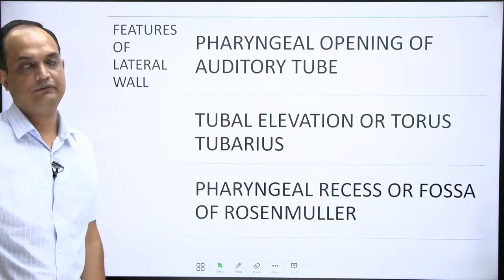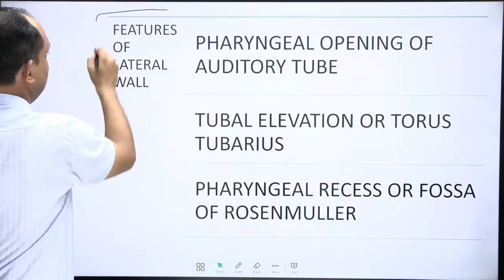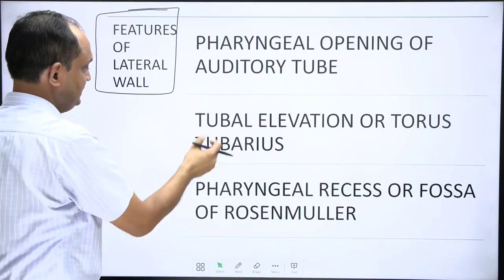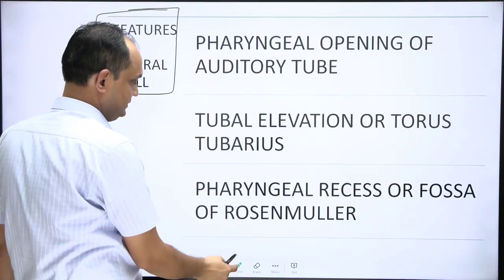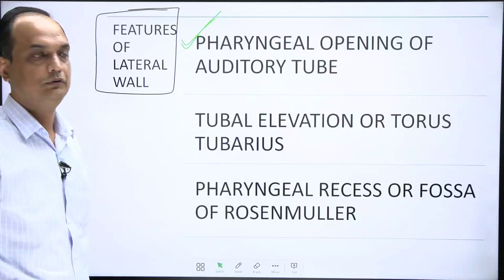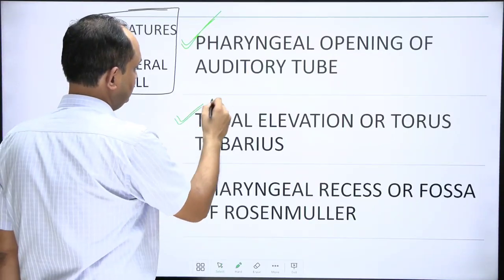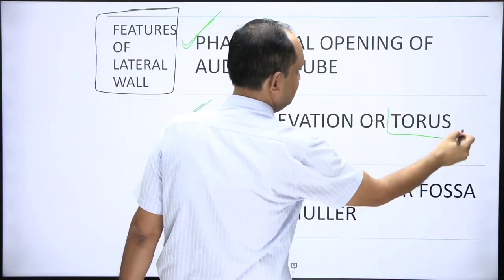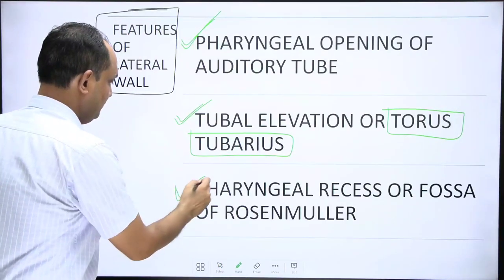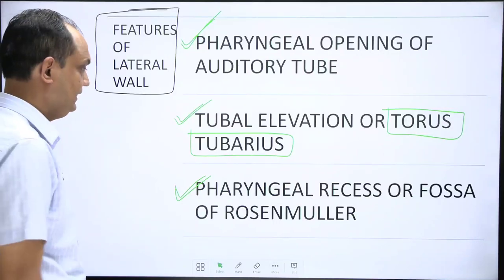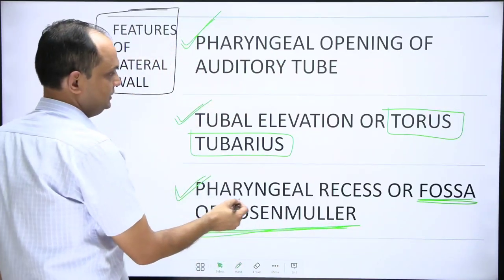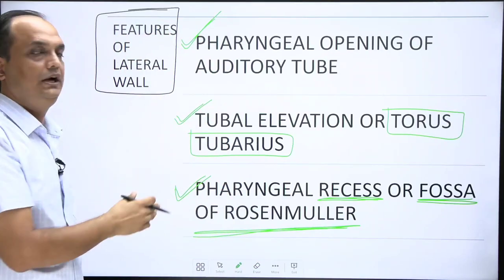Now we will see the features of each wall. The lateral wall of the nasopharynx is the most commonly asked question in exams, with three major features to write down. First is the pharyngeal opening of the auditory tube. Second is an elevation around that opening known as the tubal elevation, whose anatomical name is torus tubarius. Third is the fossa of Rosenmuller, also known as the pharyngeal recess.